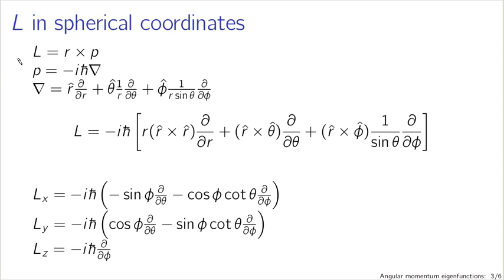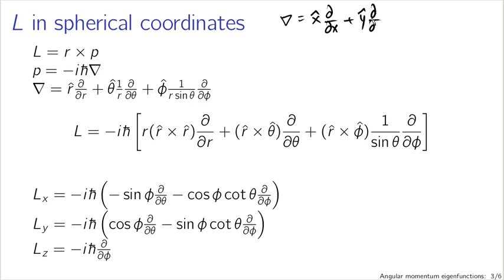What we're working with is angular momentum L, which is given by R cross P. This is the angular momentum operator, where R is the position operator and P is the momentum operator in spherical coordinates. The momentum operator is minus i h-bar times the gradient operator del, which in Cartesian coordinates is x-hat times the partial derivative with respect to x, plus y-hat times the partial with respect to y, plus z-hat times the partial with respect to z. Applied to a scalar function, it gives you a vector — a momentum vector operator.